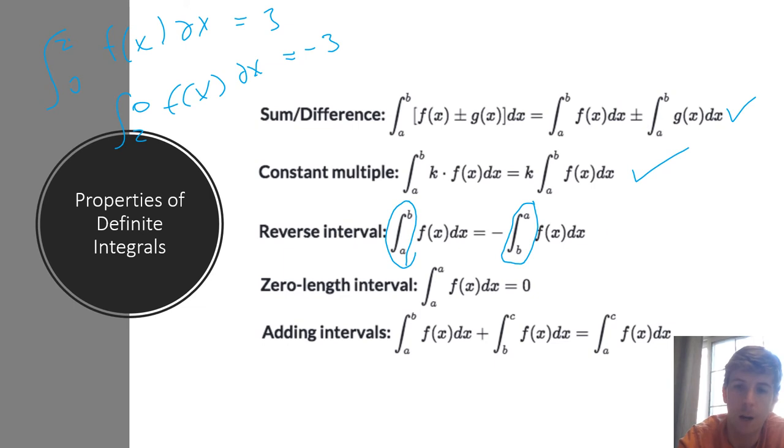The fourth rule here, zero length interval. If you have the same limits of integration, that definite integral will equal 0. That makes sense when you're thinking about the area interpretation. If you have no region, the area is going to equal 0. So anytime, no matter how complicated the function is, anytime you have the same number here and here, that integral is going to equal 0.